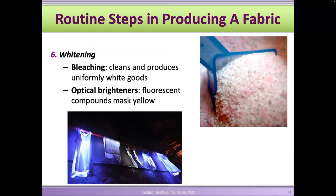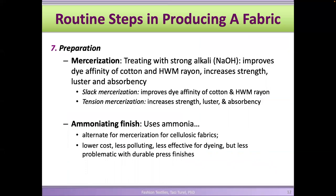If you're going to dye or print on a fabric, it must be perfectly white so the color is absorbed uniformly across the surface. We go through a whitening process using bleach, or optical brighteners — fluorescent compounds sometimes found in powder detergents that mask the yellowness on white fabrics and make them look whiter.